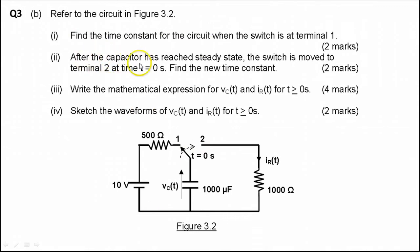After the capacitor has reached steady state, where 10 volts and 10 volts are balanced, the switch changes over to terminal 2 with a new time constant. In part 3, we write mathematical expressions for the voltage across the capacitor and the current flowing through the resistor for time greater than zero. Finally, we sketch the waveforms of Vc and IR after the switch has been closed.